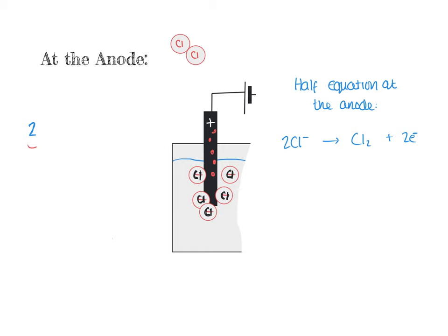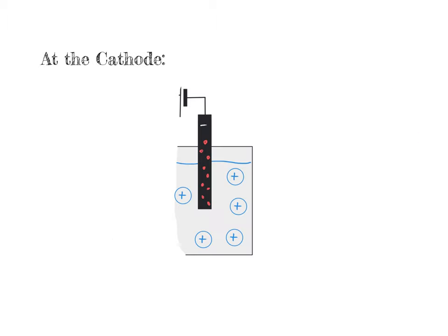Now let's look at what's going on at the cathode with the positive ions. When the chloride ions dropped their electrons at the anode, those electrons are pushed around the circuit by the voltage from the power supply and they end up at the cathode. So the cathode is negatively charged because it's full of electrons. All these electrons are sitting on the cathode waiting. In solution, as soon as the power supply is switched on, the positive ions — the cations — all begin to arrive at the cathode.